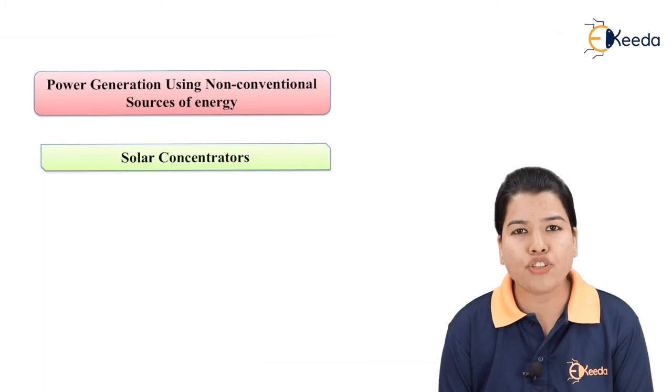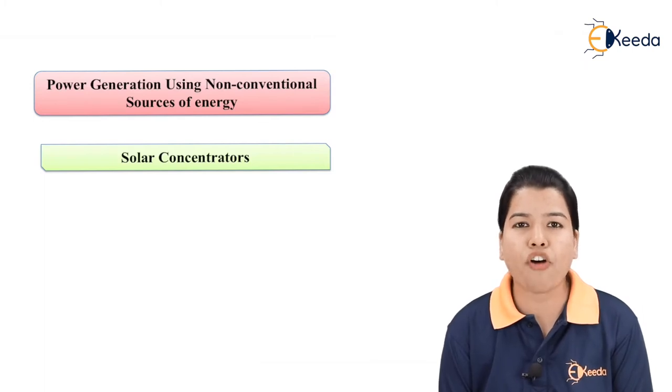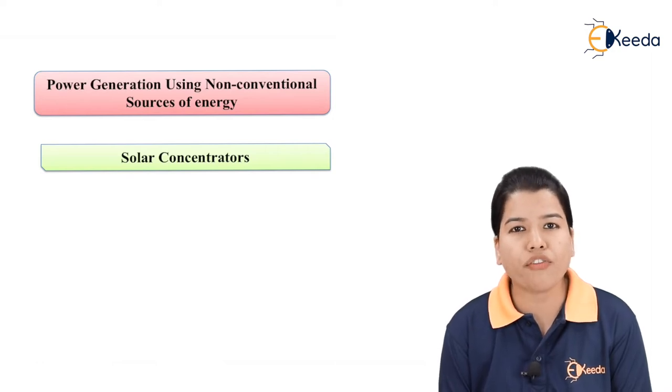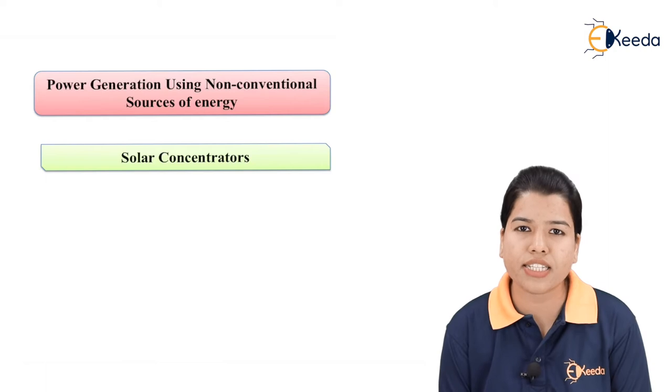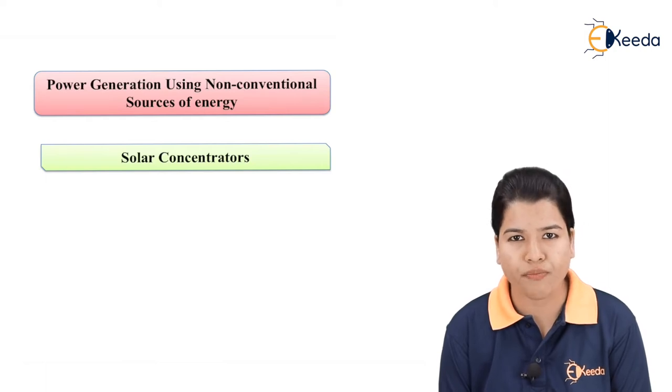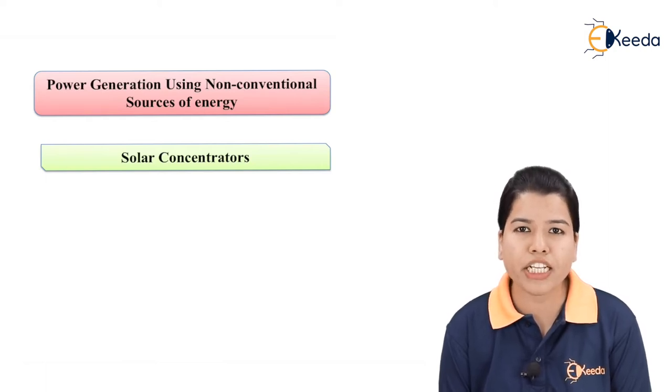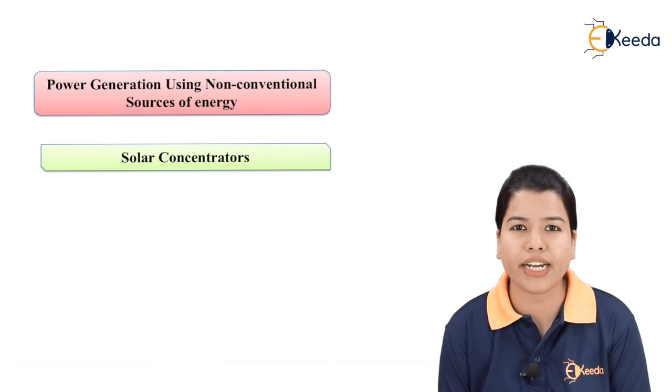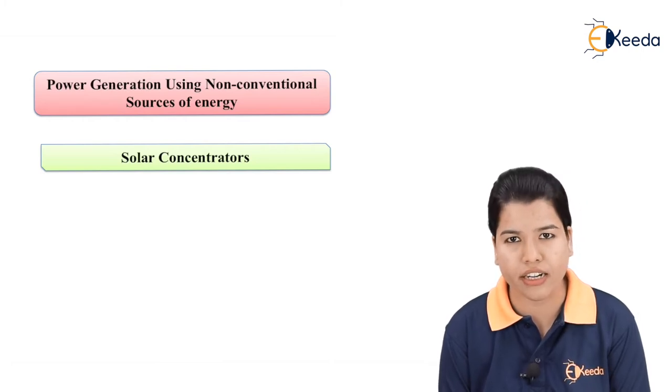In order to absorb the solar energy which is in the form of radiations, we can either use collectors or concentrators. The use of collectors is already seen in the previous video. When the temperature required is higher than 100 degree centigrade, the collectors are not useful because the temperature range for solar collectors is from 40 degree centigrade to 100 degree centigrade.